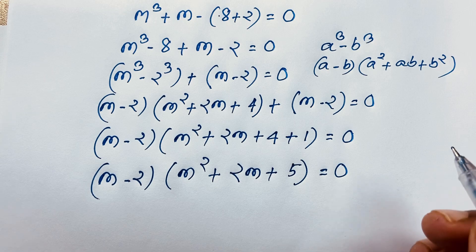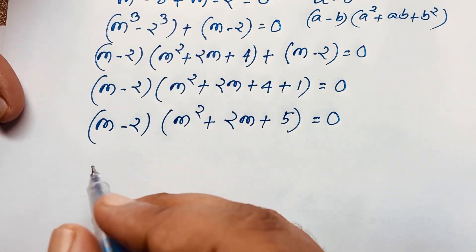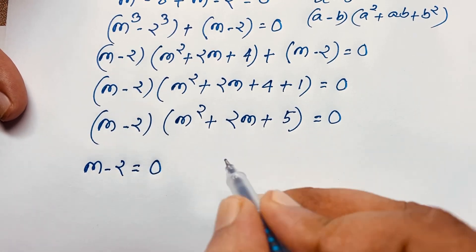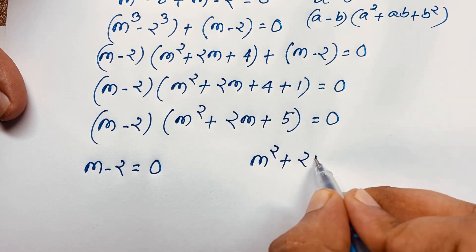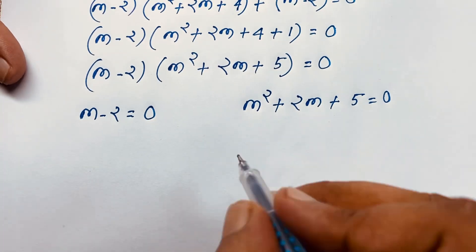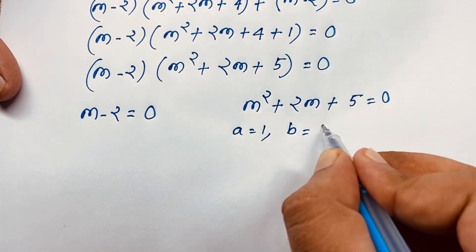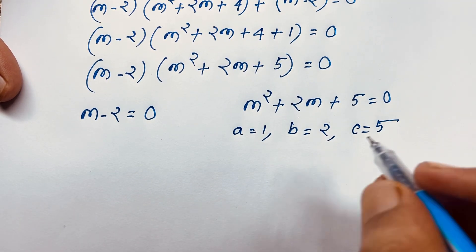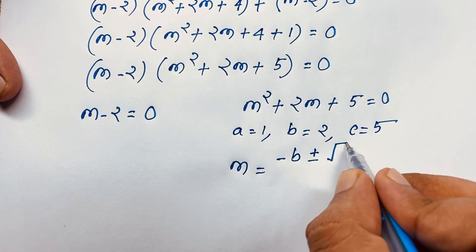We now have two cases. First case: m minus 2 equals 0. Second case: the quadratic equation m² + 2m + 5 equals 0. For the quadratic, a equals 1, b equals 2, c equals 5. We apply the quadratic formula: m equals negative b plus or minus square root of b² minus 4ac, over 2a.